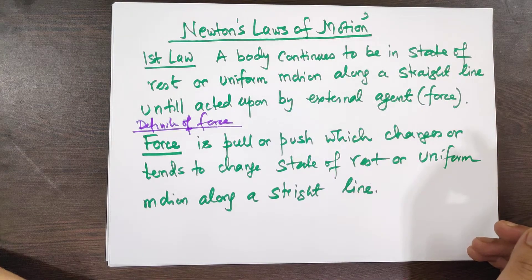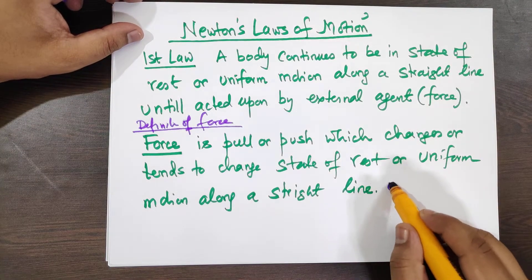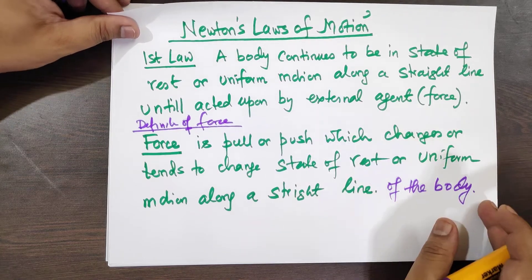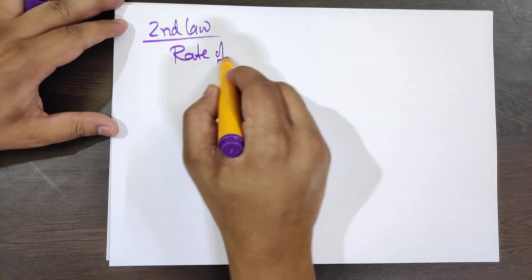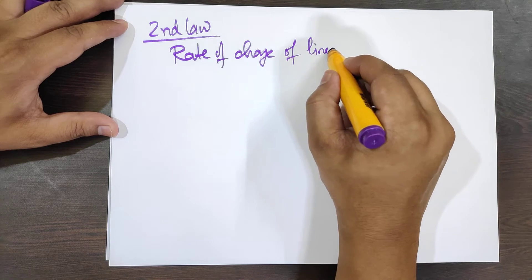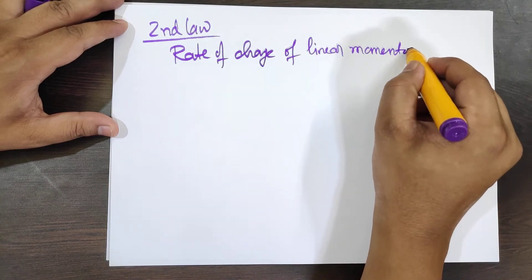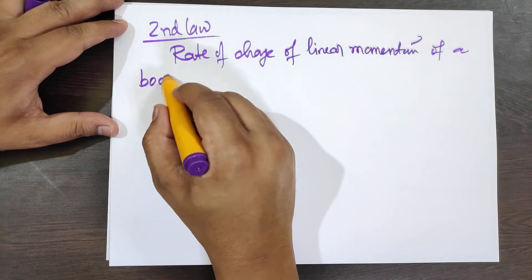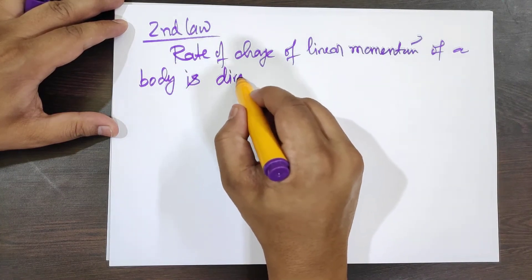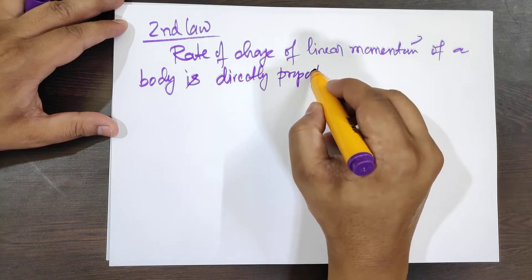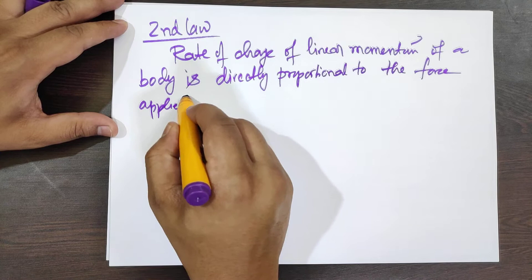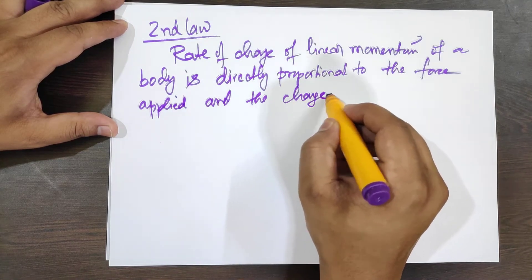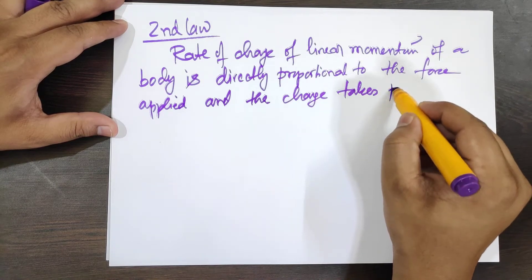Newton's second law says that the rate of change of linear momentum of a body is directly proportional to the force applied, and the change takes place in the direction of force.